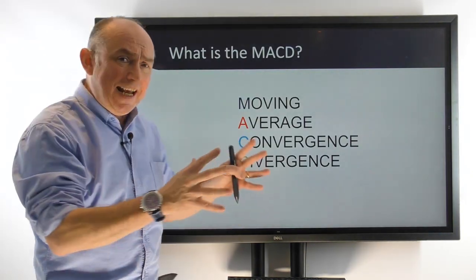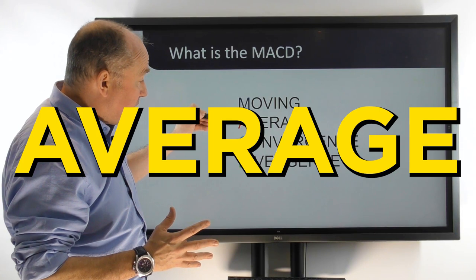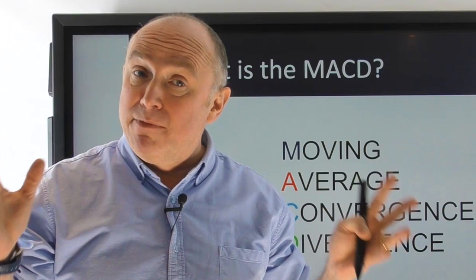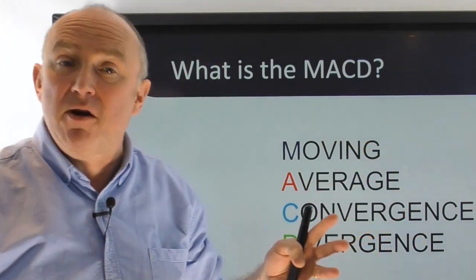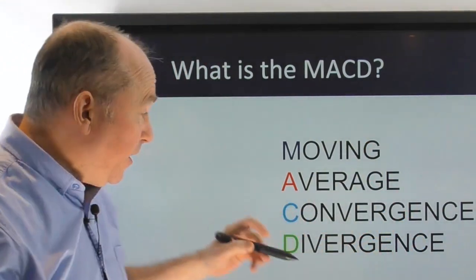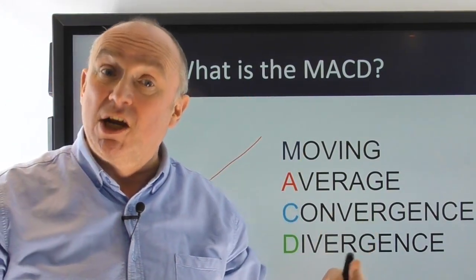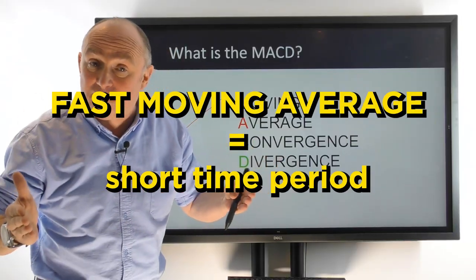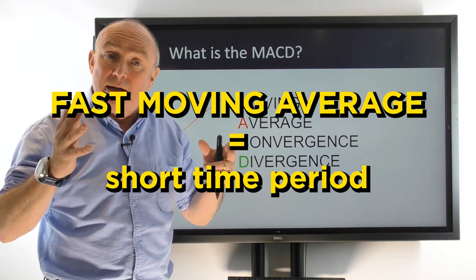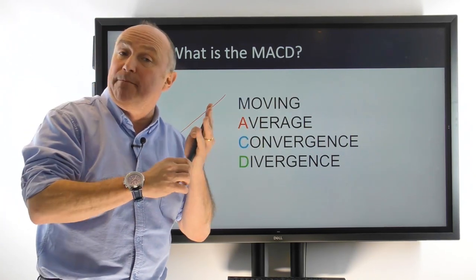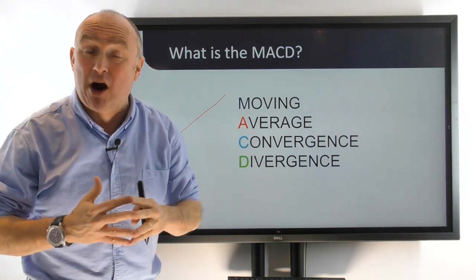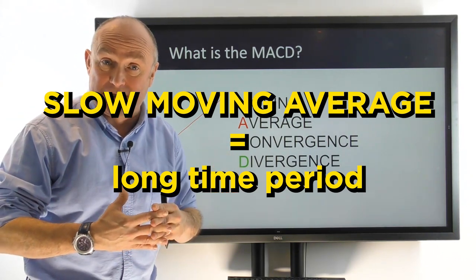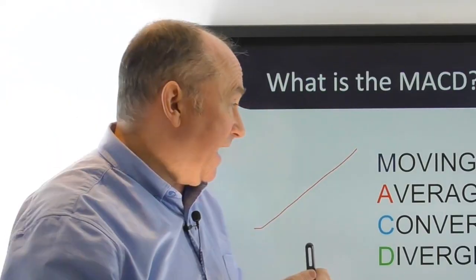The MACD is an acronym for Moving Average Convergence and Divergence. It's basically another way of looking at moving averages. A moving average is a line on a chart that averages out price over a period of time — over a look-back period of candles. You've got a fast moving average, which would normally be a low number, averaging out over a small number of recent time periods and reacting quickly with price. Then you've got a slow moving average, which is less reactive to price. So basically the MACD looks at two moving averages.